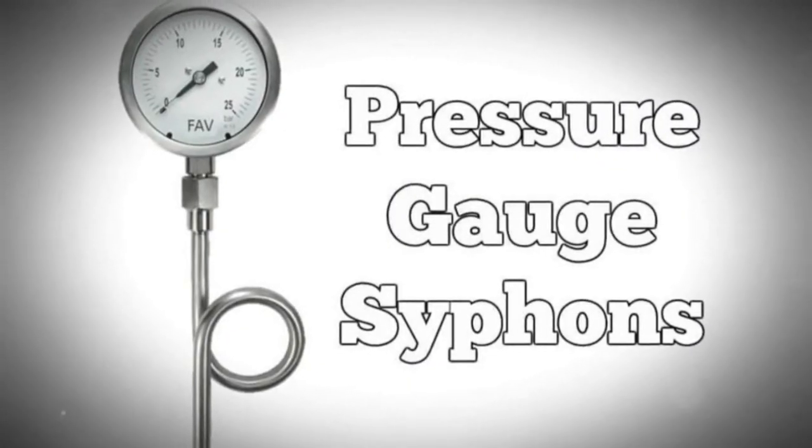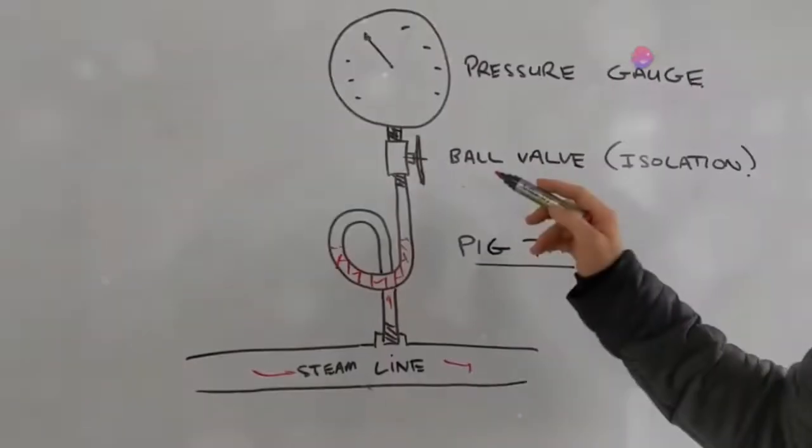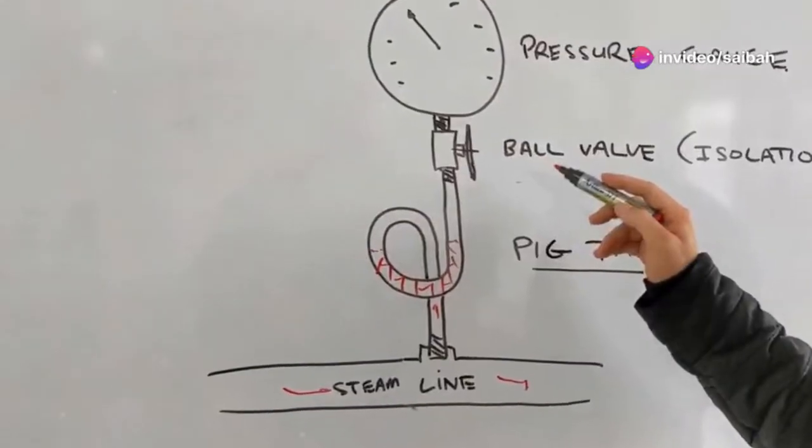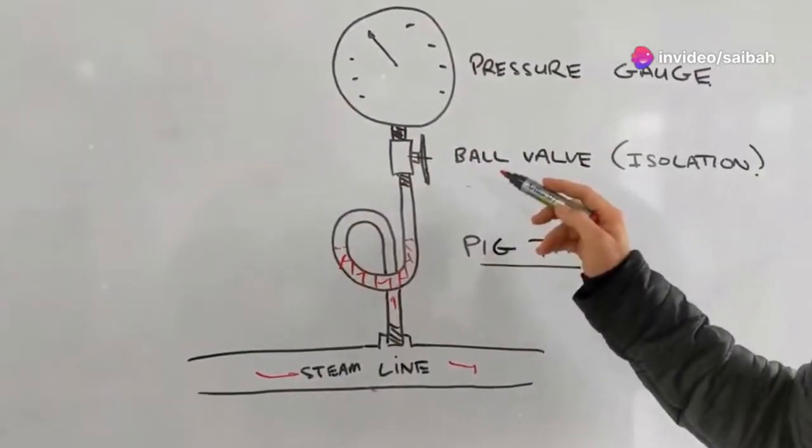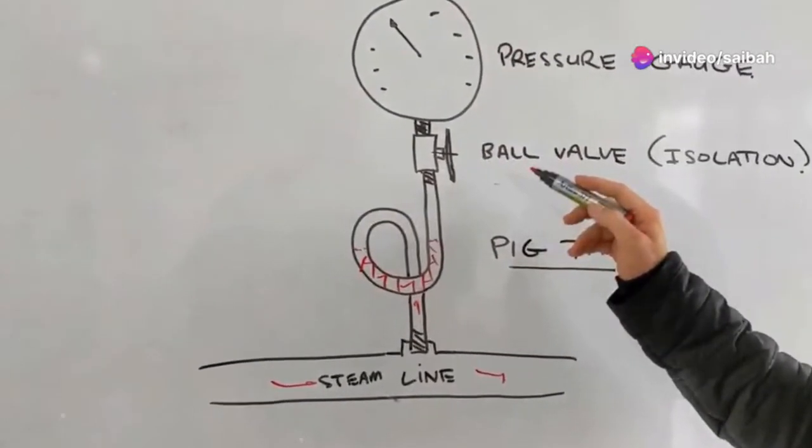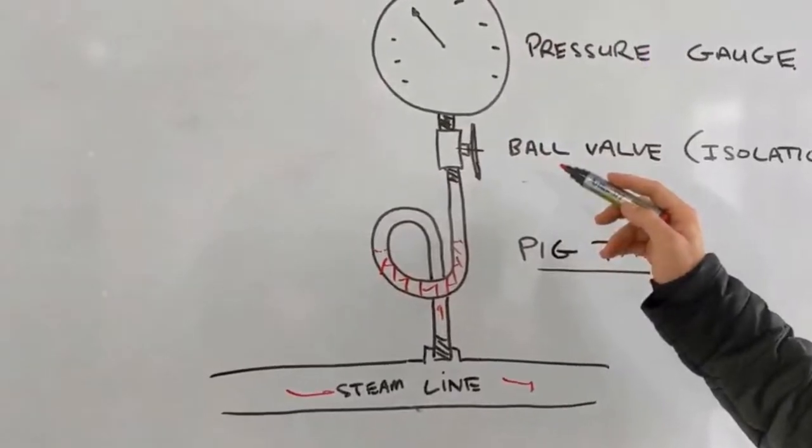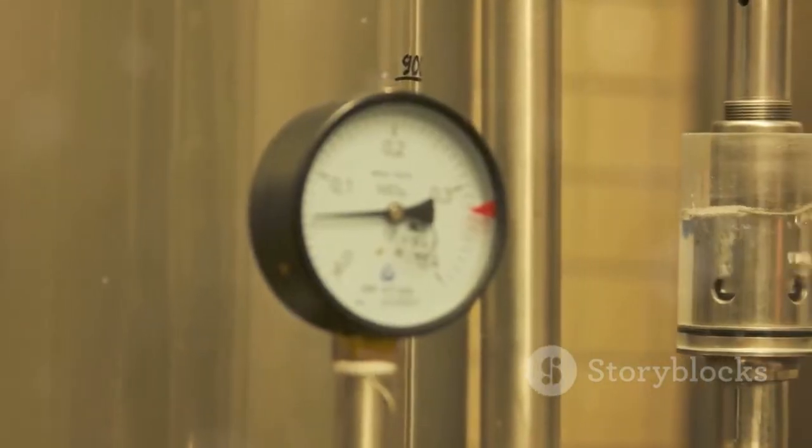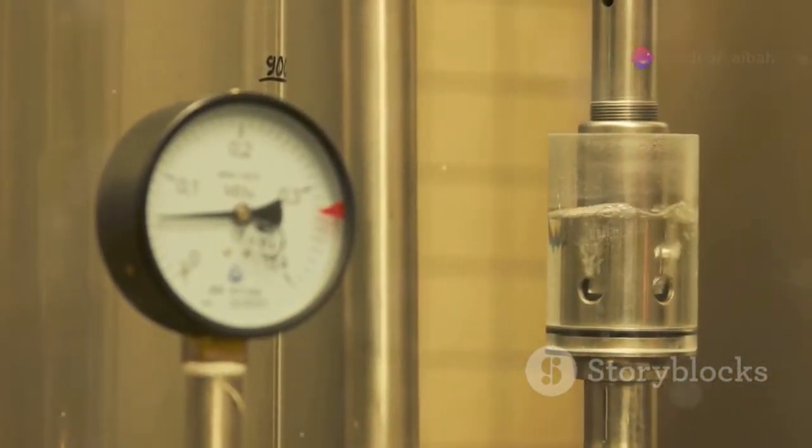So, what exactly is a pressure gauge siphon? Imagine it as a little guardian for your pressure sensors. These nifty devices protect your sensors from the harsh effects of high temperatures and rapid pressure changes. They're simple, cost effective and quite the lifesaver in high temperature applications.